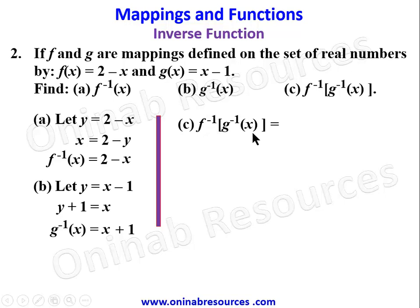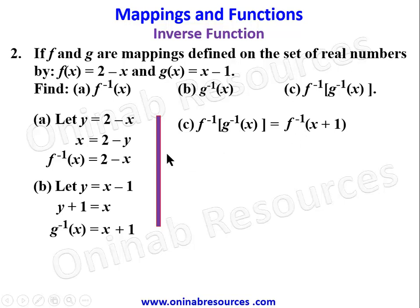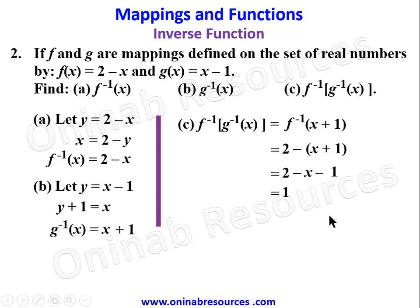For part (c), we find f⁻¹∘g⁻¹(x) where g⁻¹ comes first then f⁻¹. We substitute g⁻¹(x) = x + 1 into f⁻¹, so we have f⁻¹(x + 1). In f⁻¹, wherever we see x we put x + 1, giving 2 - (x + 1). Simplifying: 2 - x - 1 = 1 - x. That is the composition of f⁻¹ and g⁻¹(x).